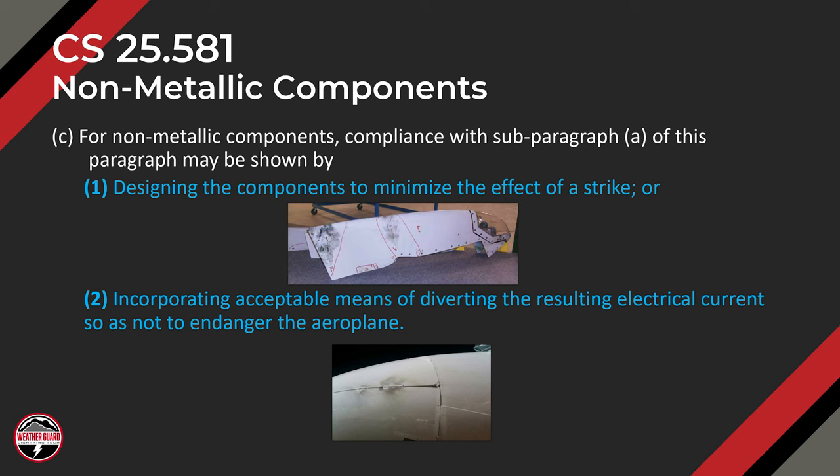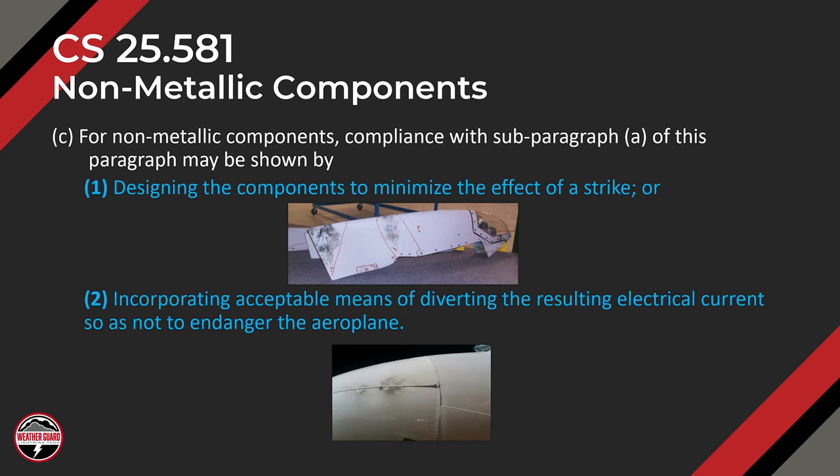The other option, Part 2, shows an Airbus radome which has a copper bar on it — that's a means of diverting electrical current. The copper bars provide a pathway for lightning to travel away from the non-conductive fiberglass Kevlar nose of the Airbus airplane. So those are two different examples: diverting the current or incorporating acceptable means to carry the current. That's the regulation.